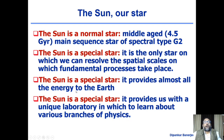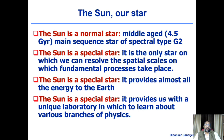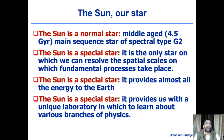The sun is a normal star — a middle-aged main sequence star of spectral type G2. Stars are formed from the interstellar medium and go through a life cycle; the sun is just middle-aged. It is the only star on which we can resolve the spatial scale on which fundamental processes take place, because majority of objects we see in the sky are observed as point objects. Being very close to us, the sun allows us to see much more detail on its surface. It provides almost all the energy to the Earth.